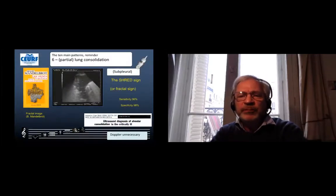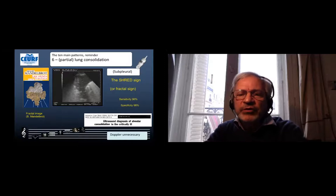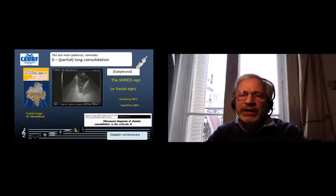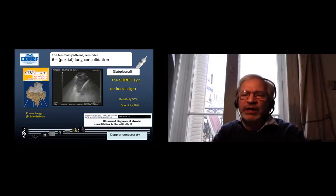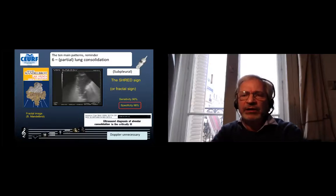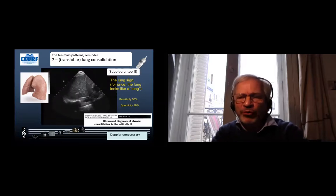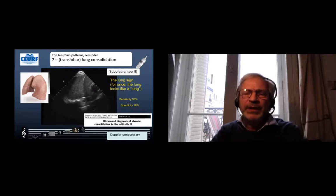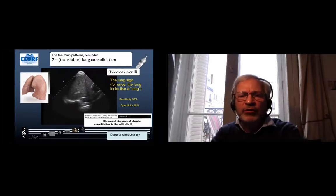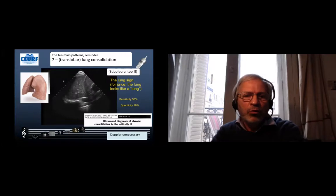The lung consolidation - we use the fractal philosophy. This consolidation is subpleural so we can see it and we can see what we call the fractal side or the straight side which clearly indicates lung consolidation, here partial. Here is a huge translobar consolidation. It is also subpleural, which means that the word subpleural for the experts is useless. We see the lung sign we called V-sign like this because novice has the feeling to see the whole lung anatomical, but that is completely abnormal. The lung should not be seen with ultrasound. Fully specific also, no need for Doppler.